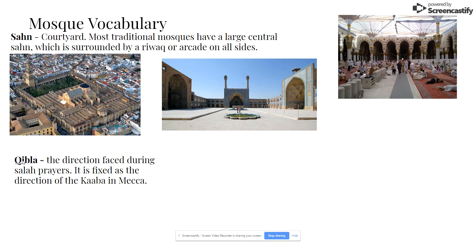The really important idea you need to know is the Qibla. Qibla is the direction that's faced during prayer, and that direction is towards Mecca. Why Mecca? Because that is where the Kaaba is. We'll go into the Kaaba a little bit later, but the Kaaba in Mecca is the most important sacred spot, and so all prayer is directed in that direction.